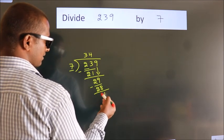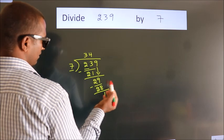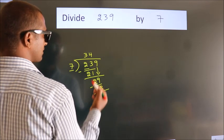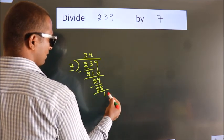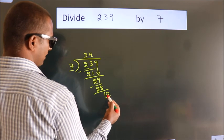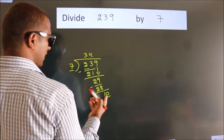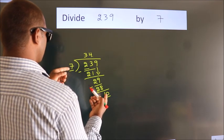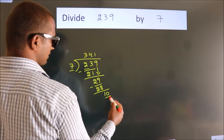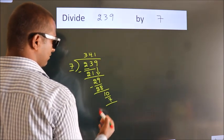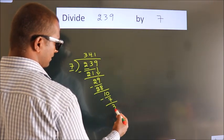After this, no more numbers to bring down. So what we do is we put a dot and take 0. So 10. A number close to 10 in the 7 table is 7 times 1, which is 7. Now we subtract. We get 3.